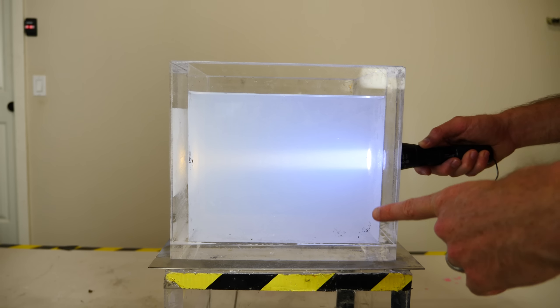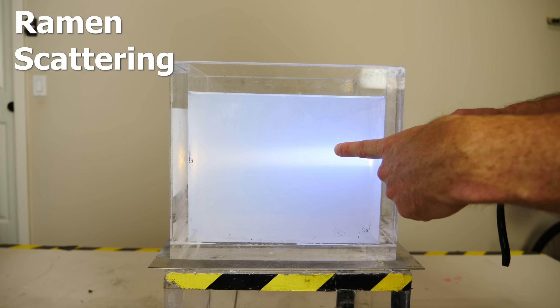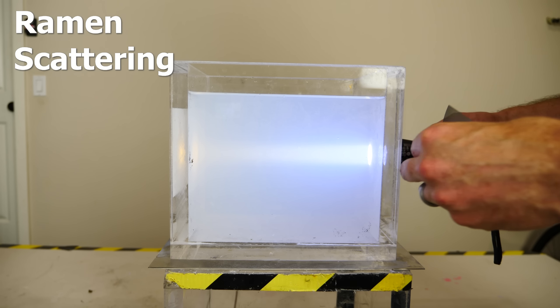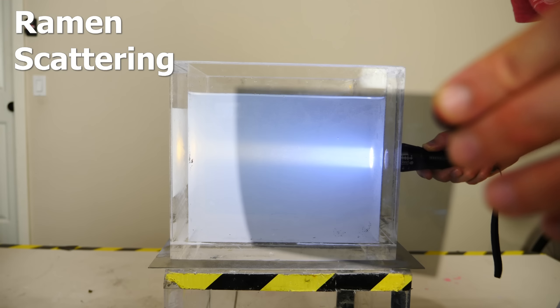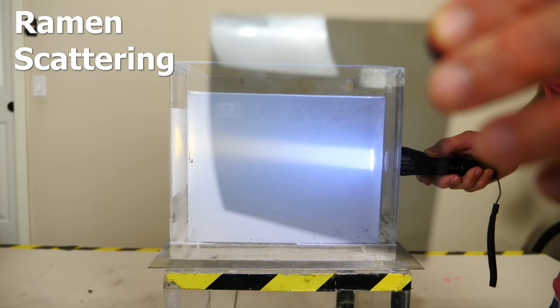In addition to Rayleigh scattering, the sky also has Raman scattering, and Raman scattering actually changes the polarization of the light coming off of it. For example, I have a polarizer held in front of the camera here. Now watch what happens when I turn it.